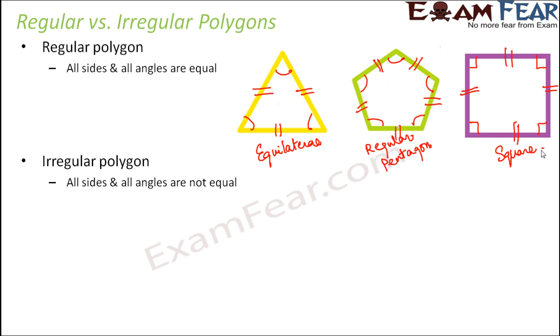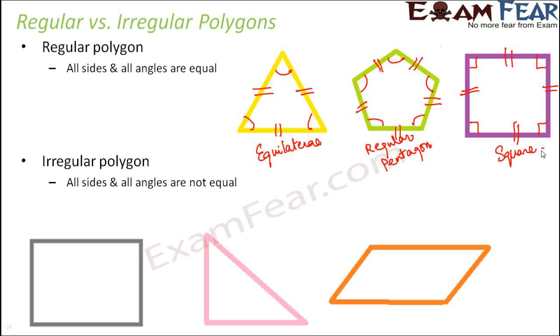So on the contrary irregular polygon would mean that all sides are not equal all angles are not equal. You look at this triangle. This is a right angle triangle. Here this angle is 90 degree but these two angles are acute angles that is less than 90 degrees. So all angles are not equal. All sides are also not equal.